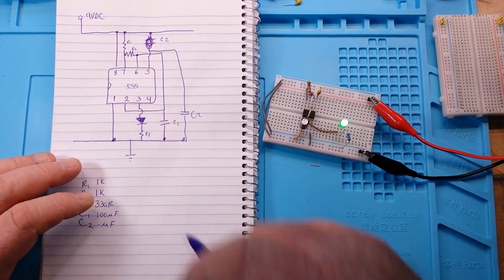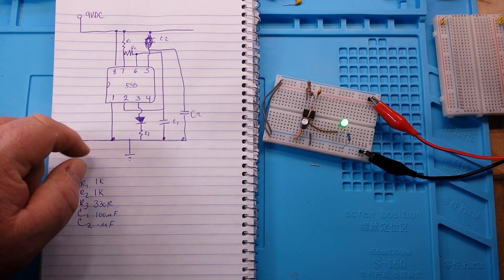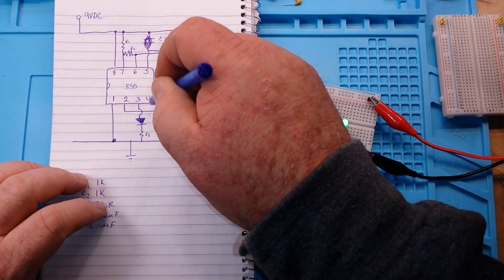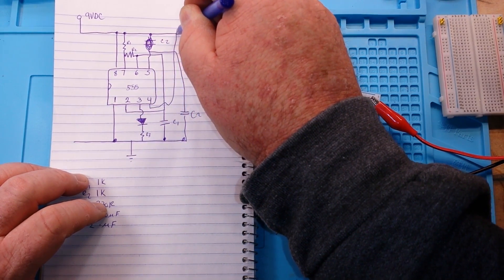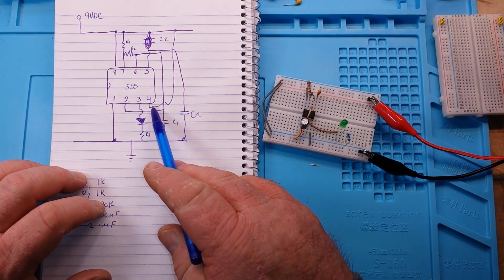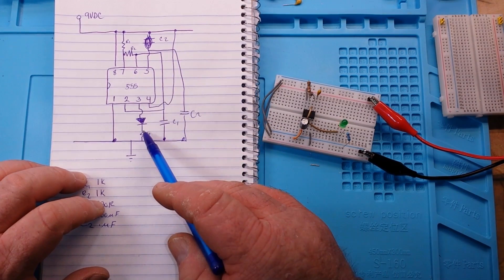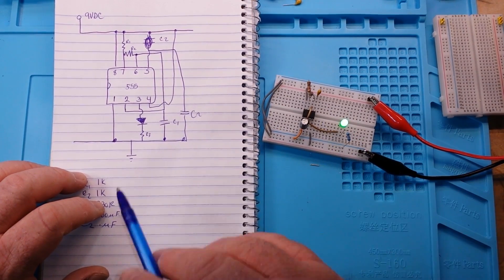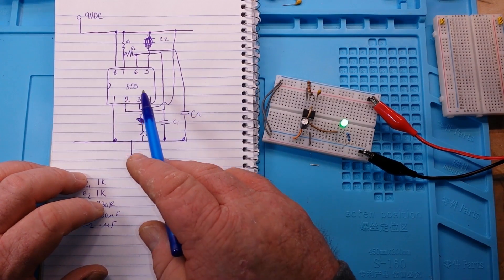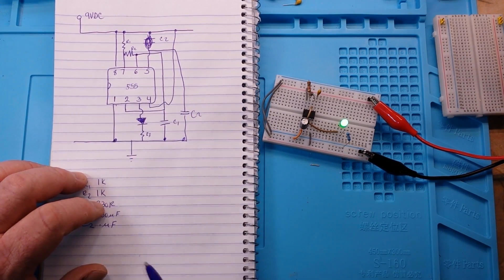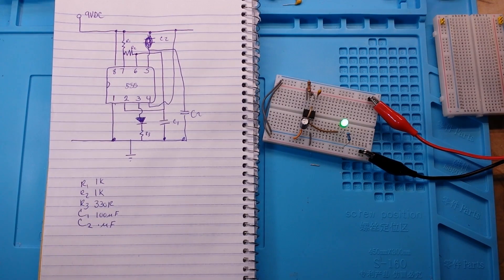Pin 4, the reset pin, is held high. Pin 3 is our output, it has an LED on it. Pin 2 goes to pin 6 and pin 1 is ground which goes directly to ground.